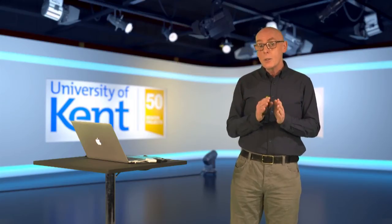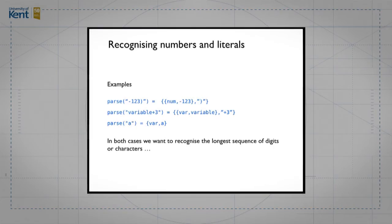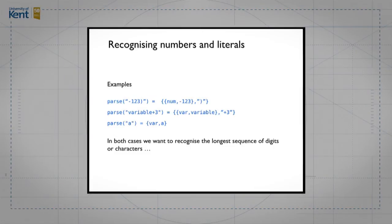We've seen an example of a composite expression, but we haven't yet looked at what we do with integers and variables. Let's take a quick look at parsing something like the string 'minus one two three, closing parenthesis'. What we spot is the number minus one-two-three and there's some stuff left over. Or we spot a string beginning with the characters of a variable name, and then there's some other stuff. In both cases, what we're looking for is the longest initial segment — the longest sequence of digits or small letters at the beginning of a string.